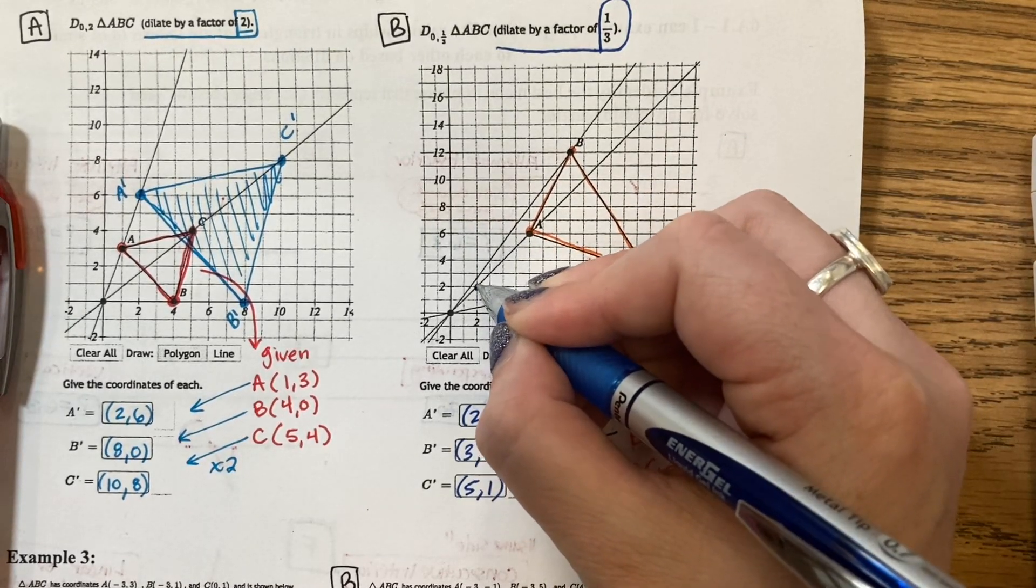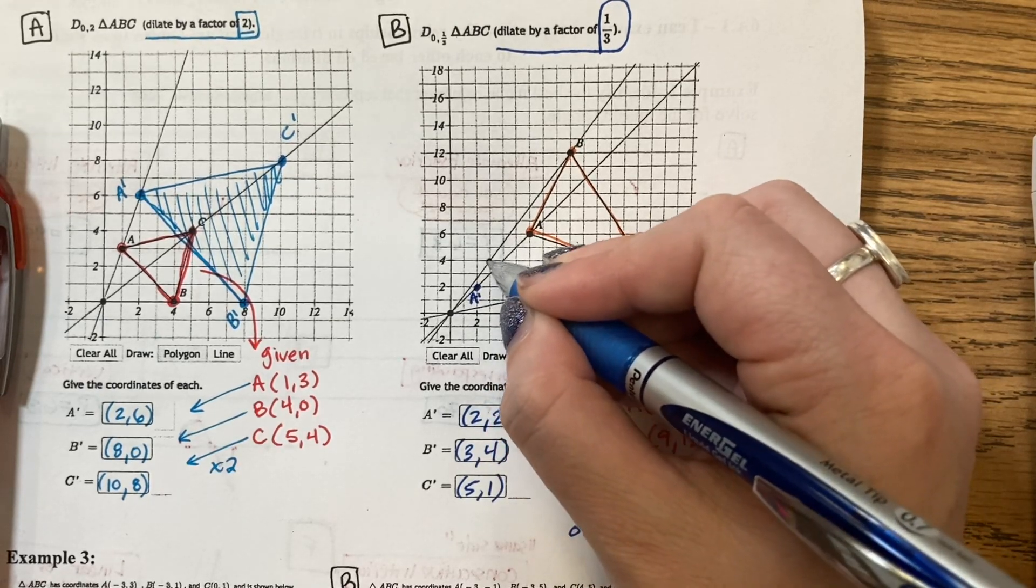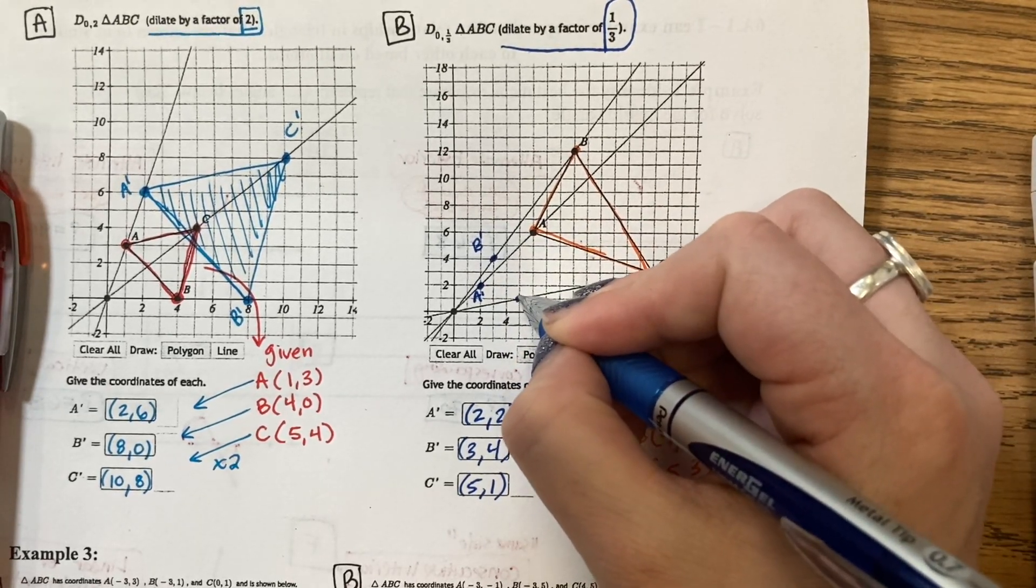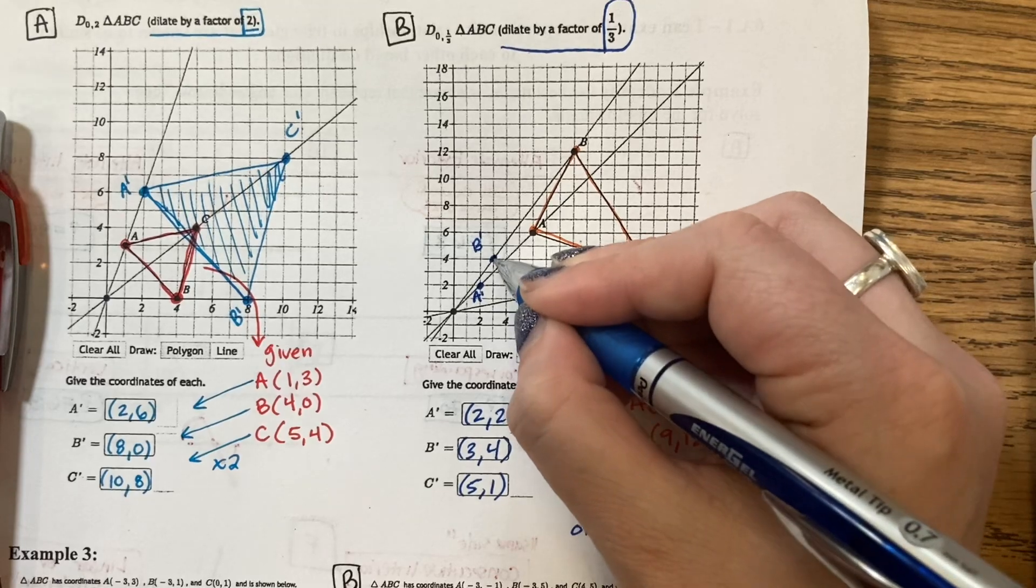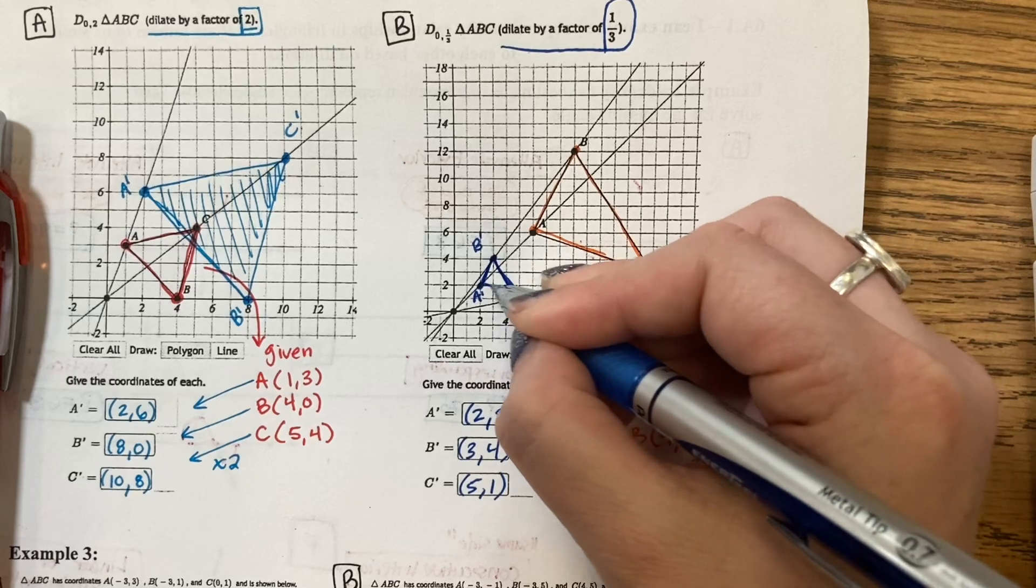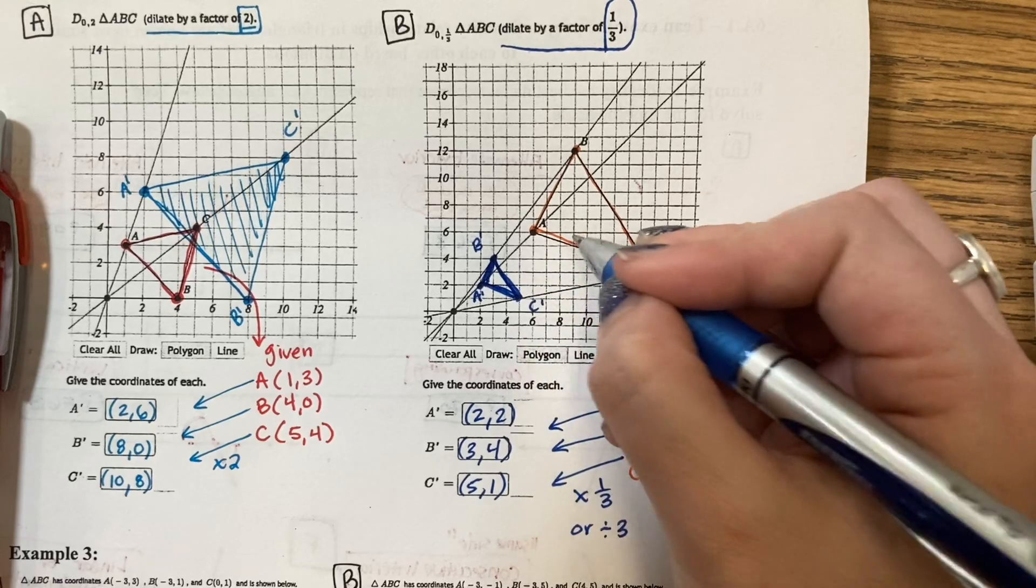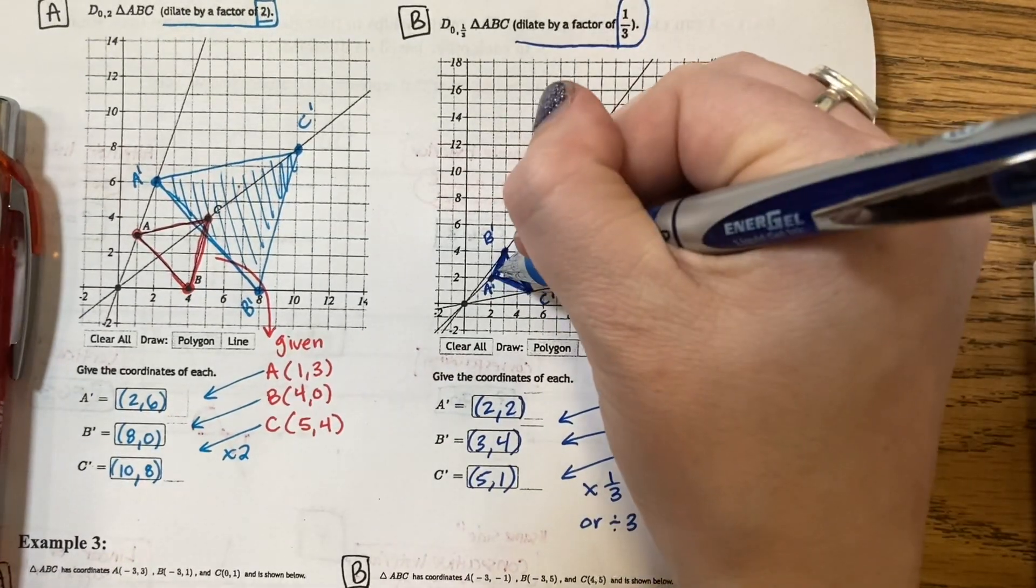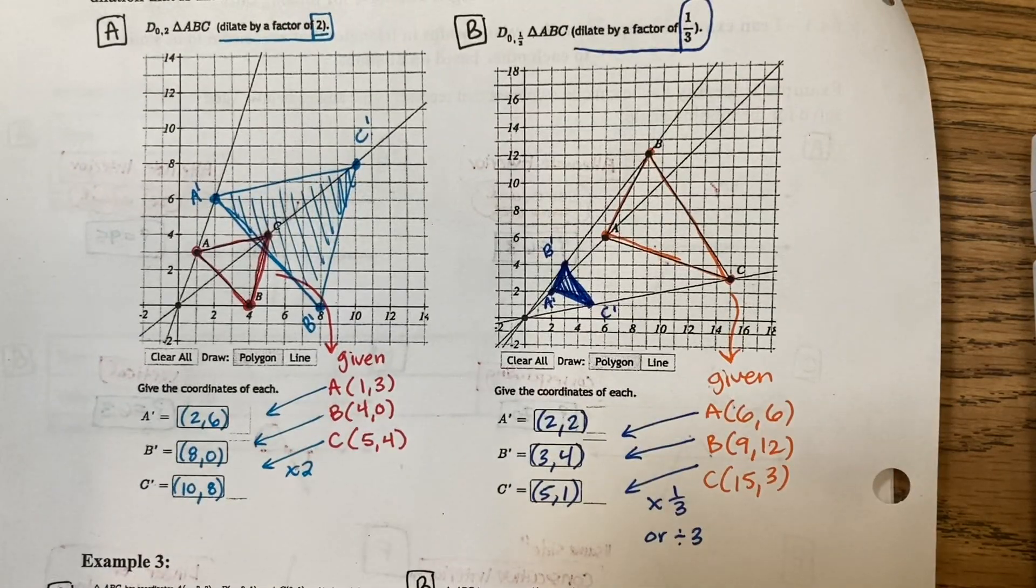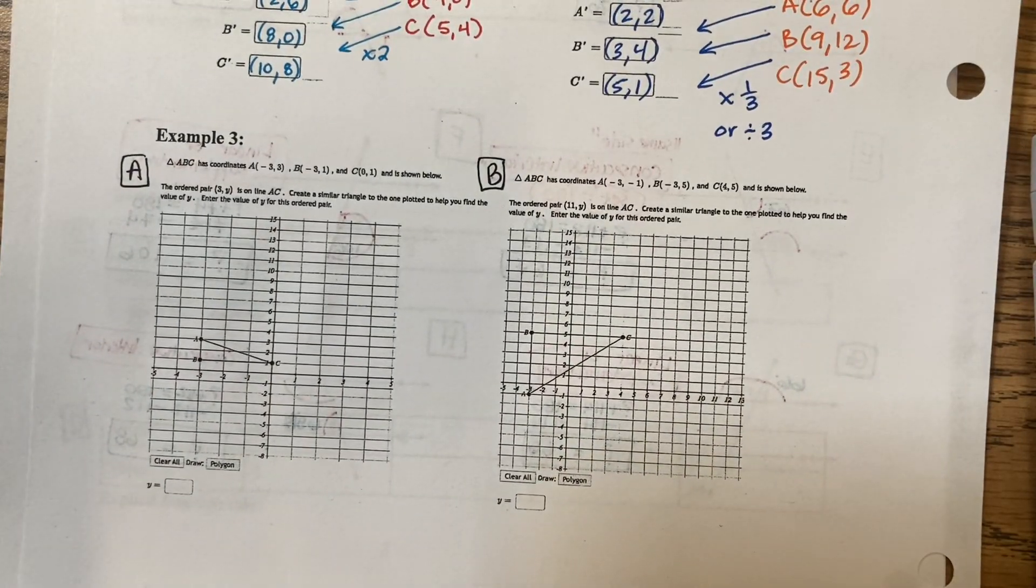2, 2. 3, 4. And 5, 1. These lines should connect. And they create a triangle 1 third of the size of the original. Next question, Example 3.